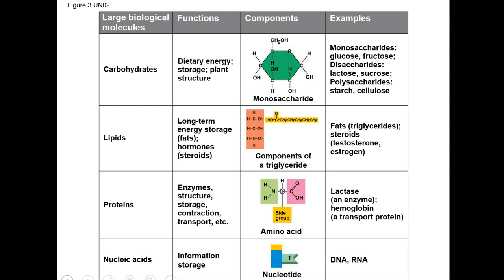This slide summarizes the four categories of biological molecules: carbohydrates, lipids, proteins, and nucleic acids. Please know examples for each of these categories, functions of these categories, and the monomer or building block used to build each category. This concludes this narrated PowerPoint lecture. With respect to the narrated PowerPoint lecture for chapters 2 and 3, you should have 20 answers for 20 questions written down. You will enter the answers for these 20 questions into the lecture quiz for chapter 2 and 3 on Blackboard. Thank you.